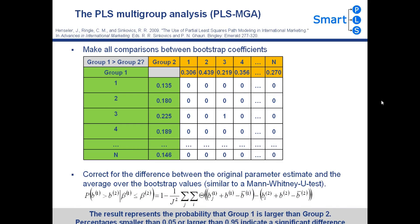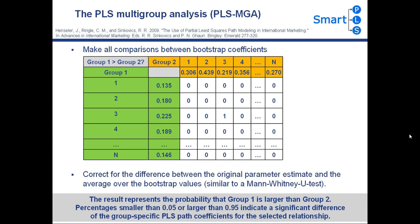Now we take a look at the PLS Multigroup Analysis, the PLS-MGA. This method is an extension of Henseler's MGA. Before, we looked at the bootstrapping results and compared row-wise the outcome of Group 1 and Group 2. Now, we make all comparisons between bootstrap coefficients. This is the key extension of the PLS-MGA approach.